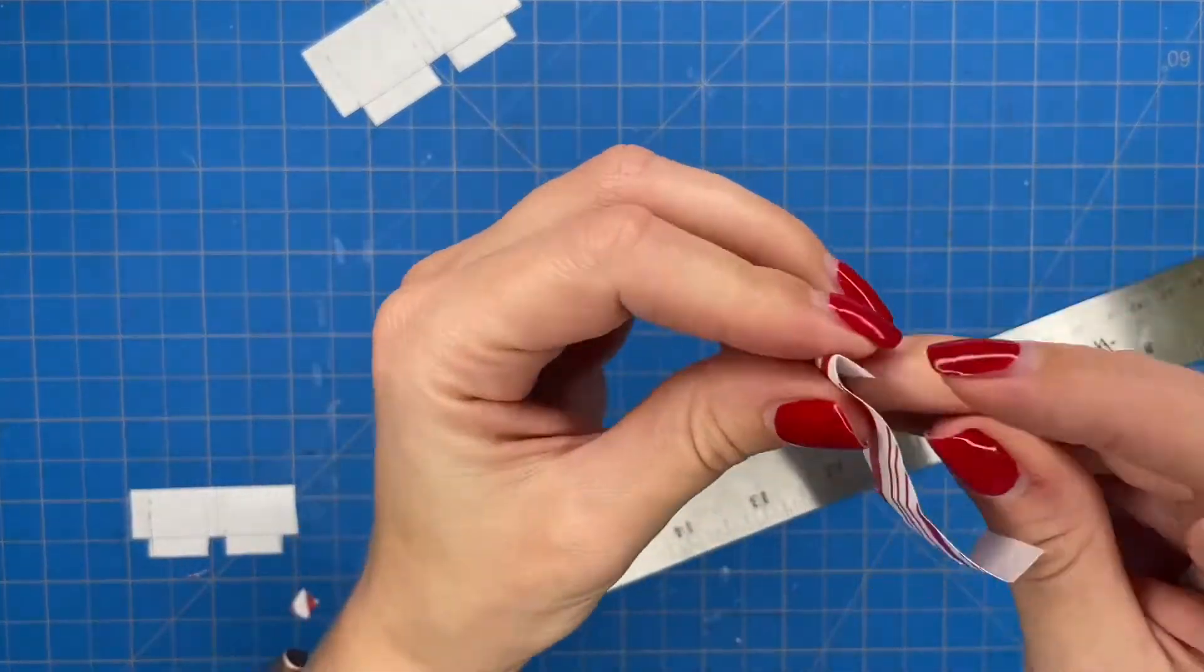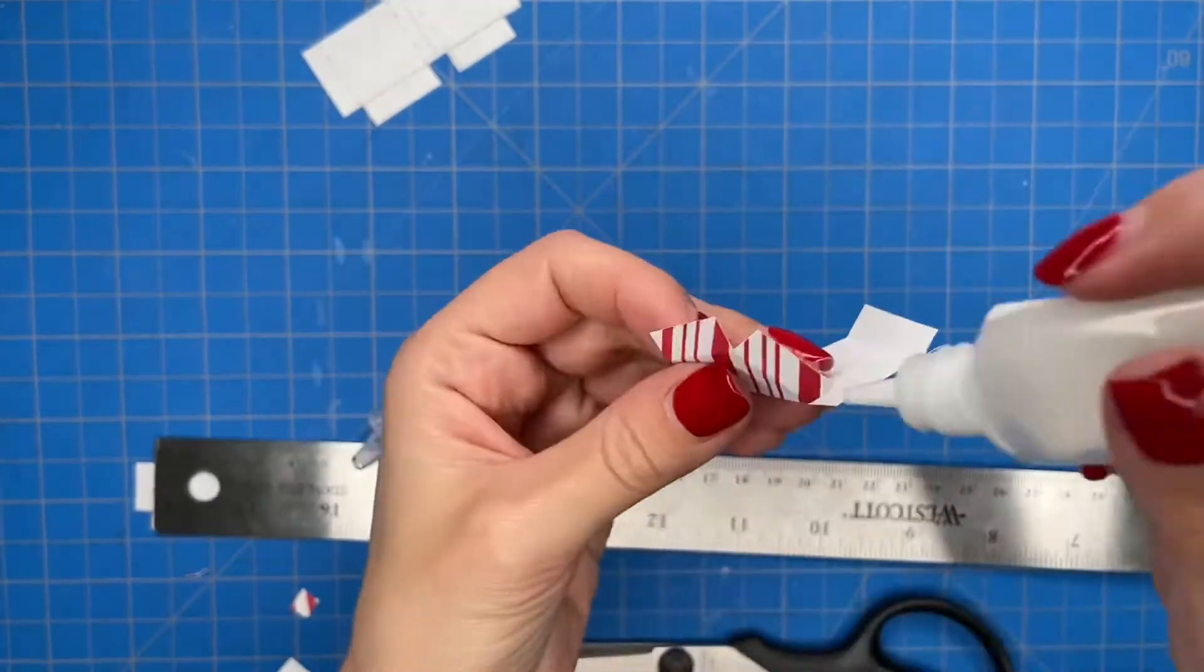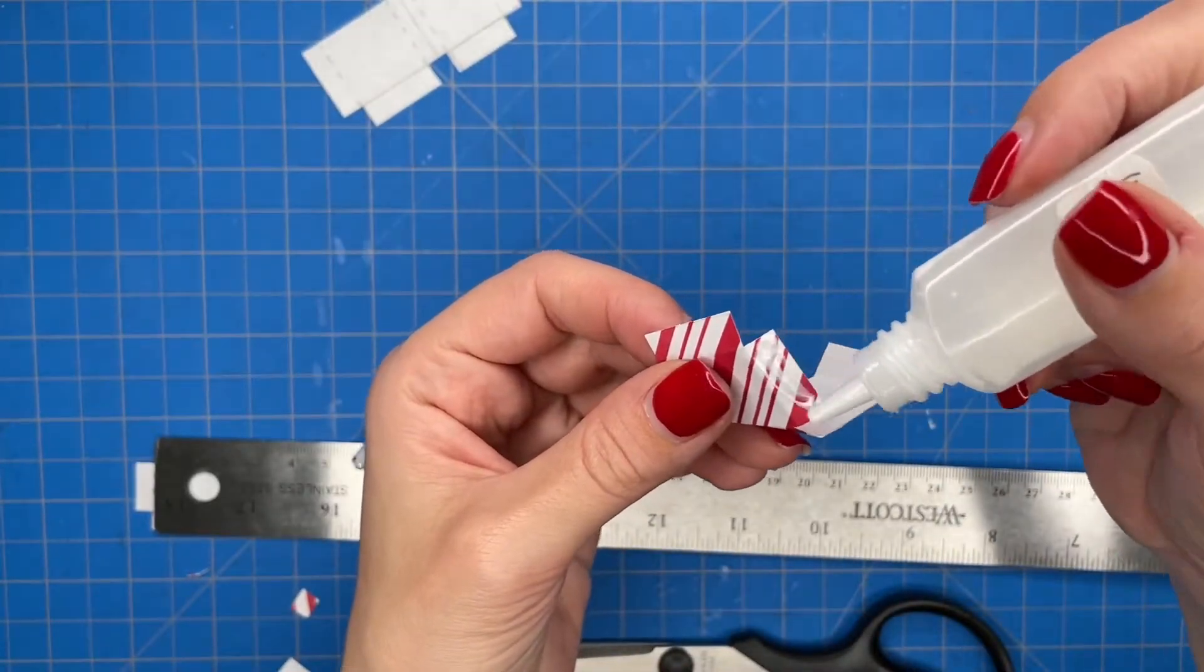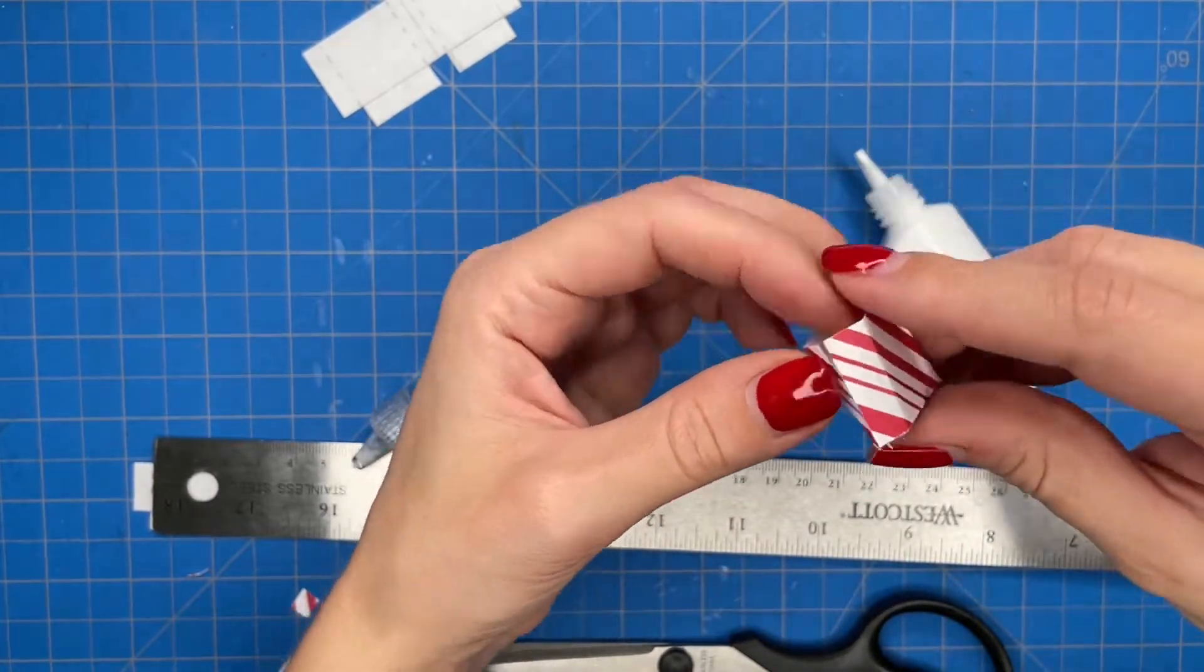Once all of the folds are in, you're going to want to take the two very bottom flaps and overlap them and then just apply a little bit of tacky glue and hold them down until they're secure in place.